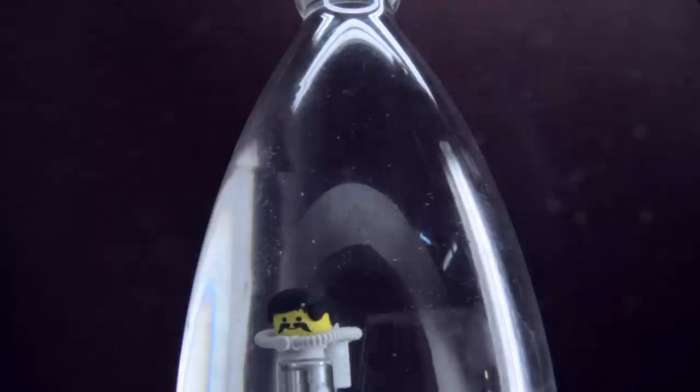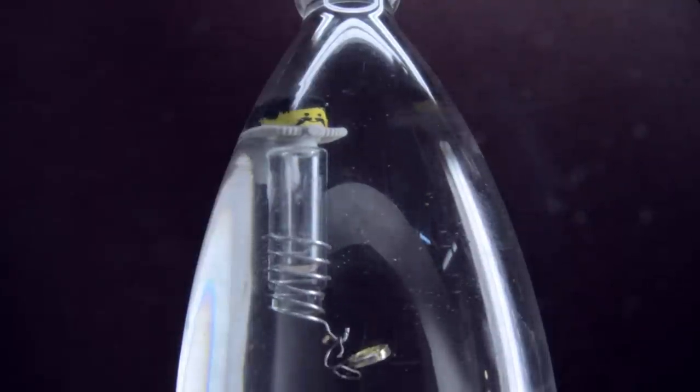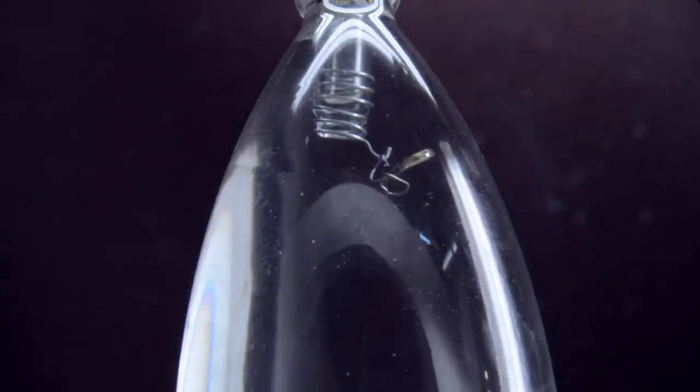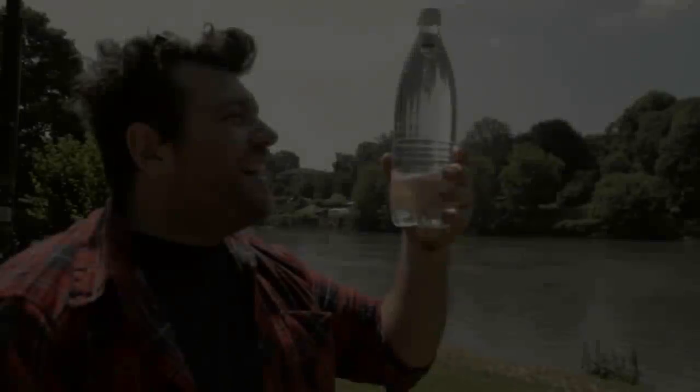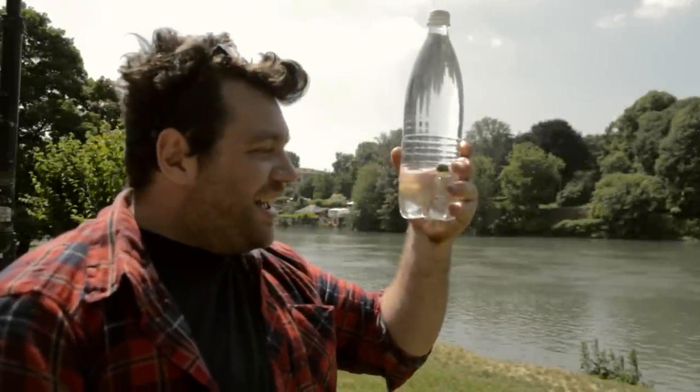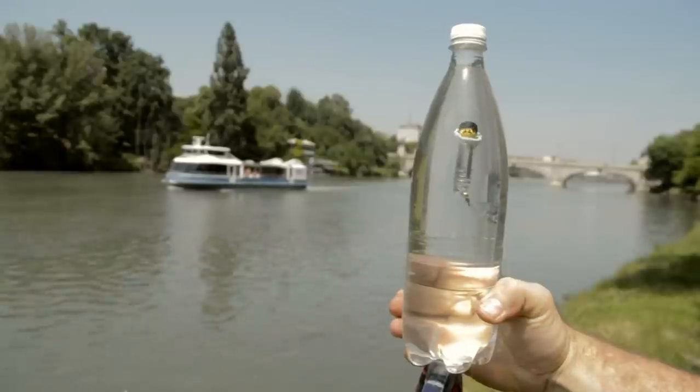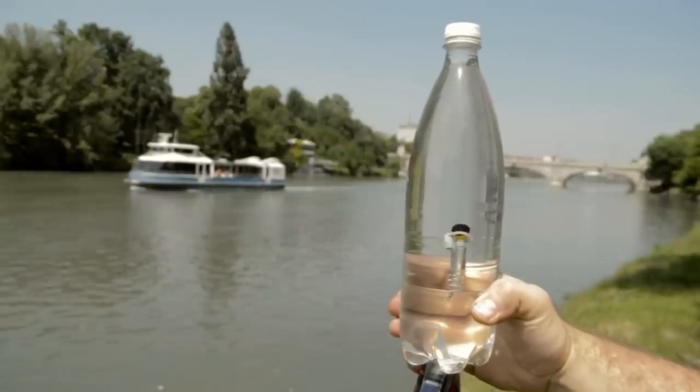Now maybe you are wondering how it works. It works by pressure. In fact, if we don't touch the plastic bottle, the air that is inside the perfume is enough to keep Antonio floating. Instead, if we squish the plastic bottle, the air that is inside the glass becomes smaller and Antonio starts to sink.